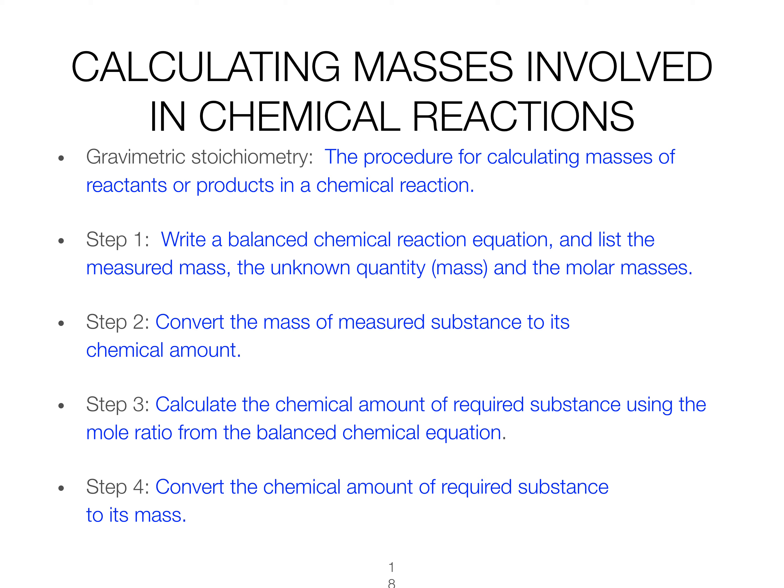Gravimetric stoichiometry specifically refers to stoichiometry that involves mass. The first step is to write a balanced chemical reaction and list our knowns and unknown quantities — in this case, masses and molar masses. We then convert the known mass into a chemical amount, going from grams to moles. Then we use the mole ratio to go from one chemical we know about to another chemical we need to know about. Our last step is to use molar mass one more time to convert back to a mass.